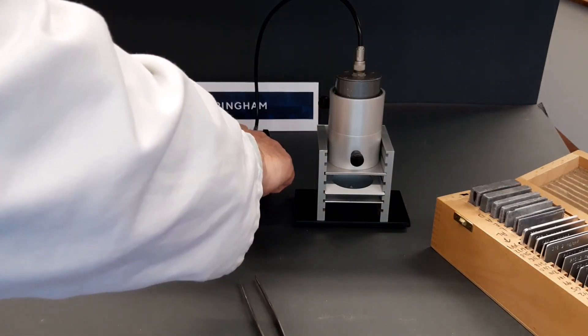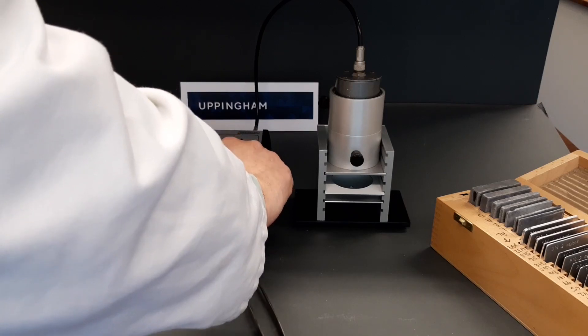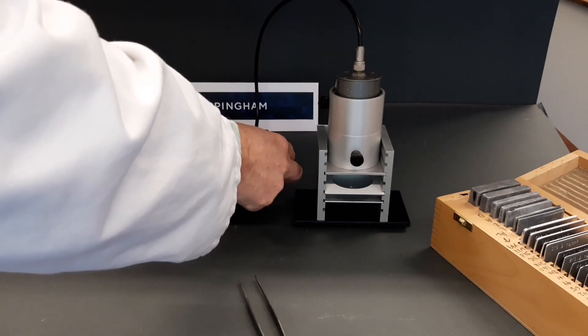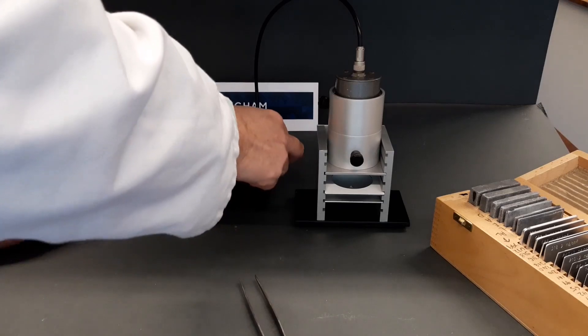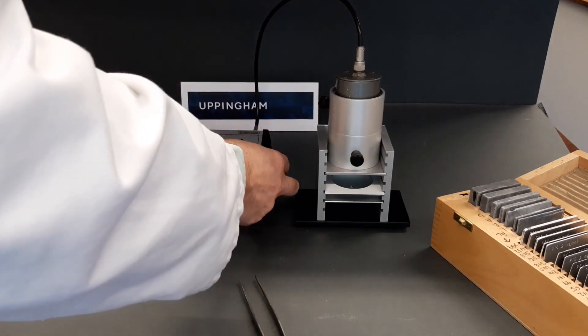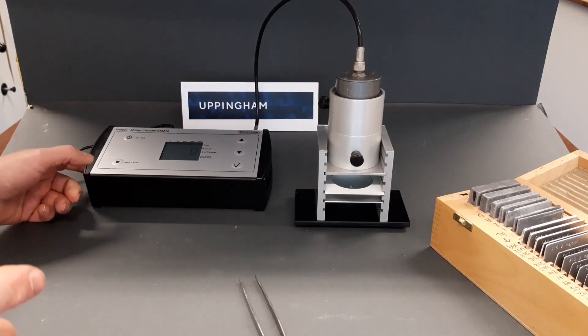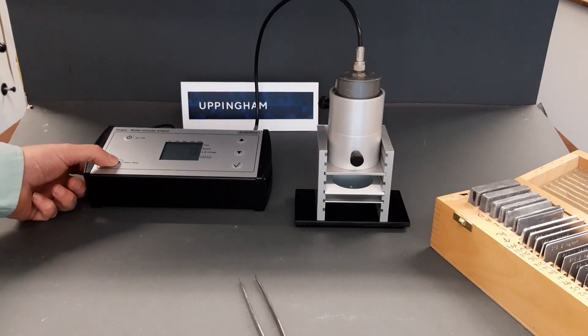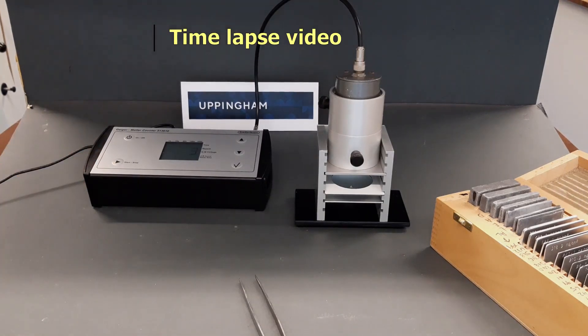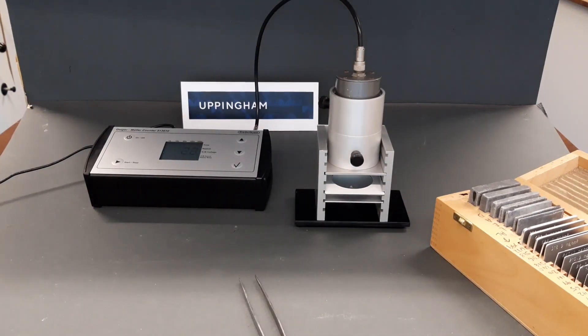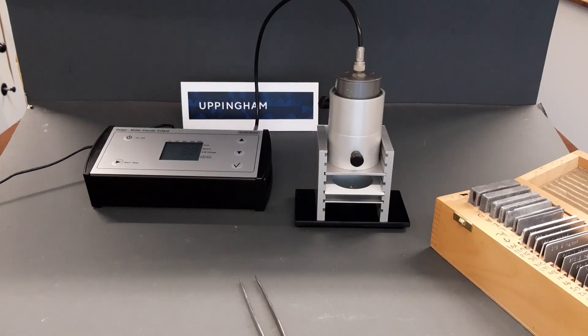I'm going to set the timing options to give 60 second counts and that's going to be done throughout it here. So we're all set ready for a zero. I'll start this going and then speed up the filming. You can see that this gives us a value of 22 counts in that minute.